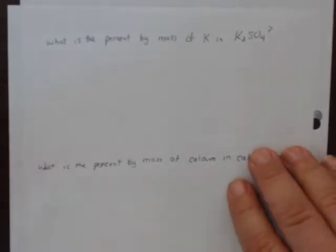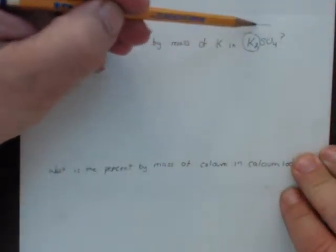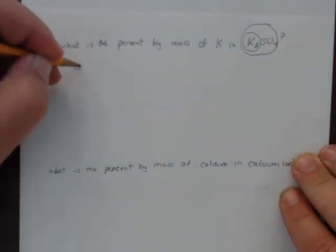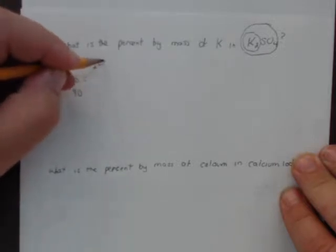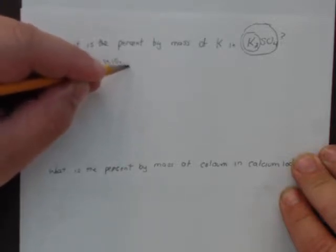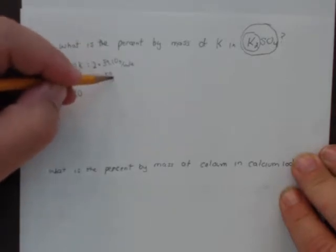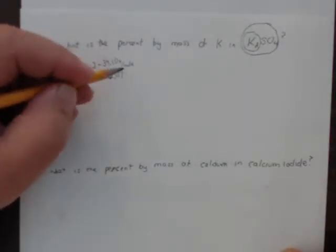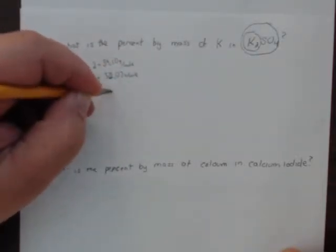First practice problem: what is the percent by mass of potassium in K₂SO₄? You want to take the mass of the two K's over the mass of the whole compound, then multiply by 100. We have two K's, one S, and four O's. The two K's are 2 × 39.10 grams per mole from the reference table. Sulfur is 32.07 grams per mole.